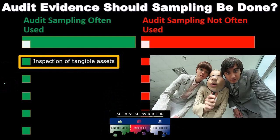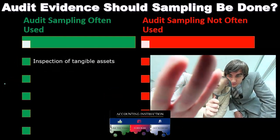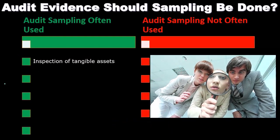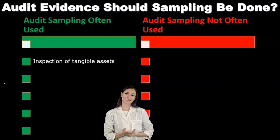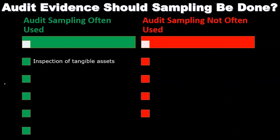Typically we're going to use some type of sampling if we have inspection of tangible assets. If we're going to go out and inspect the tangible assets, we're not going to inspect all of them — we're going to have to do some type of sampling method. We'll decide which of those tangible assets we need to go inspect, then inspect those particular tangible assets to assess whatever assertion we're looking for, such as existence, and then apply findings to the population as a whole.